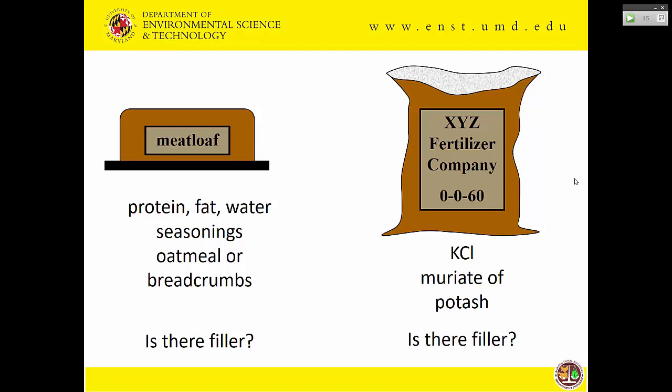One more slide on filler: when you make meatloaf, why is it on the table? You're eating it for the protein. You also get some fat — that's like the chloride in potassium chloride, it's just there. But you also put in oatmeal or breadcrumbs — why? To hold it together and stretch it out. That's filler — added to spread it out and meet the quantity you're making. In blended fertilizers there is filler; in muriate of potash there is no filler — there's just the other element in the compound with the nutrient.